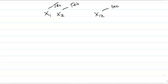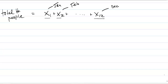We first argue that the total number of people has to equal the sum of all the variables. This is because everyone is born in some month, so the total number of people equals the number born in January plus the number born in February, all the way through December.